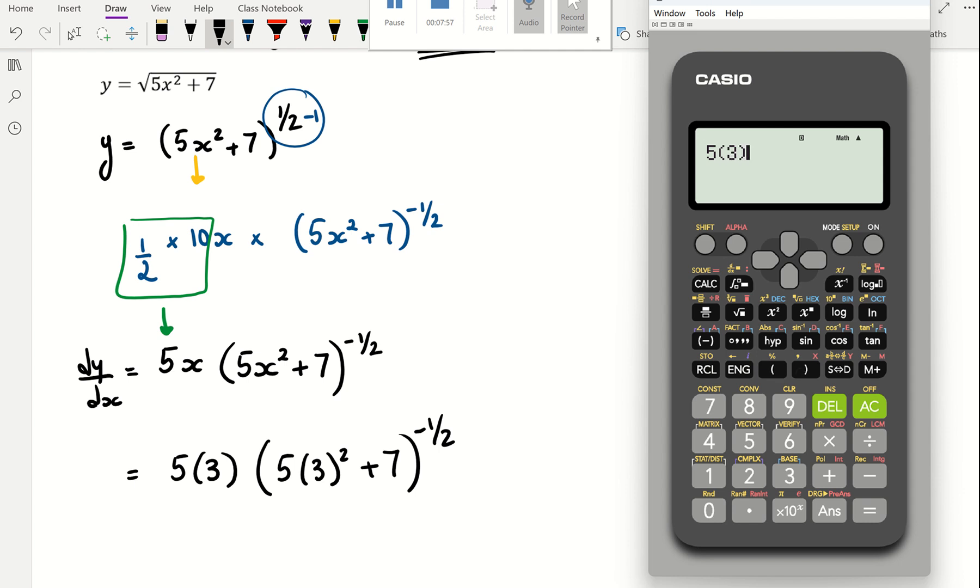5 times 3, and then we open brackets, 5 times 3 squared plus 7. And then I close my bracket and it's to the power of negative, and you can write it as a fraction or as a decimal. A half is 0.5.